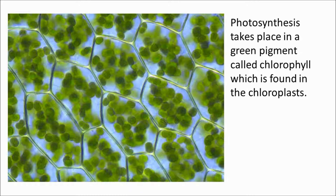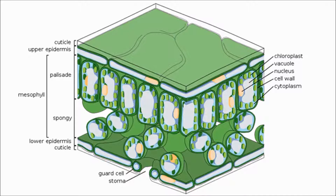So where would you find most chloroplasts? Well, if this is where photosynthesis happens and light is required for this, the most naturally obvious place to find them would be at the top of the leaf.